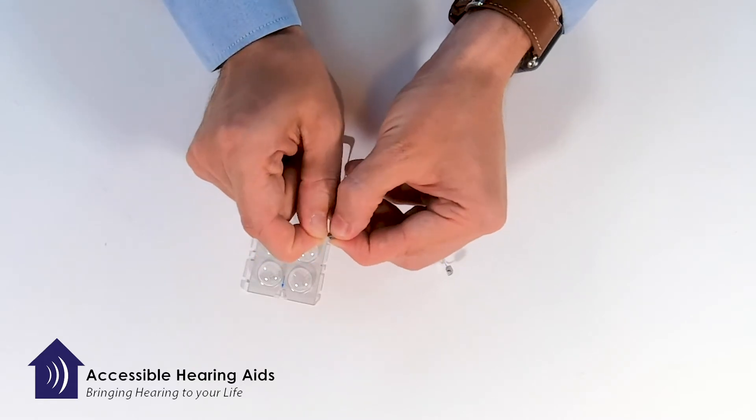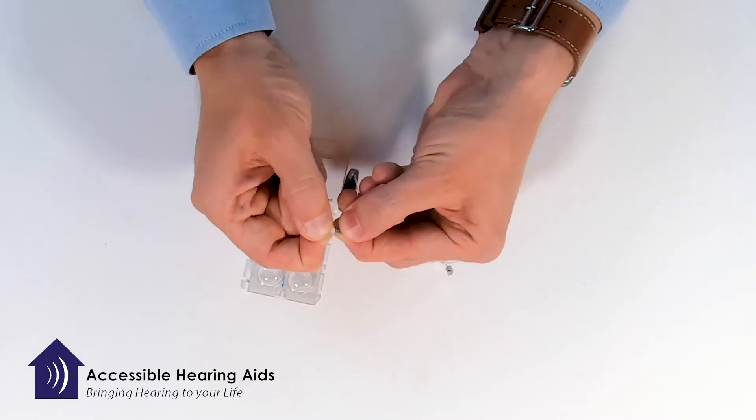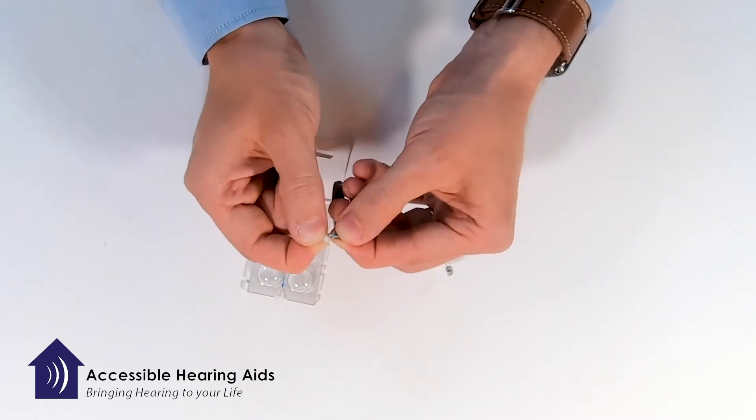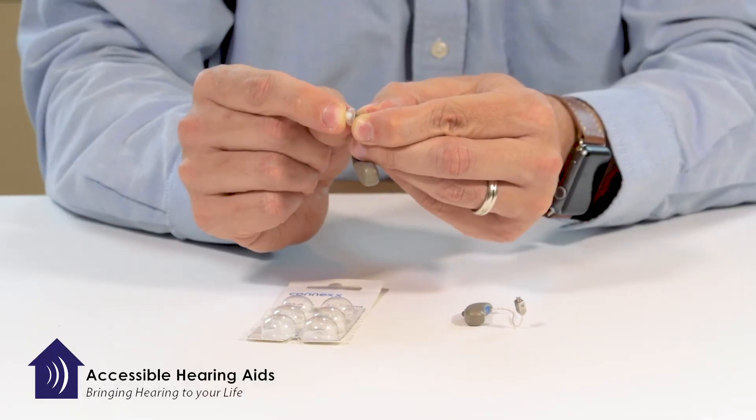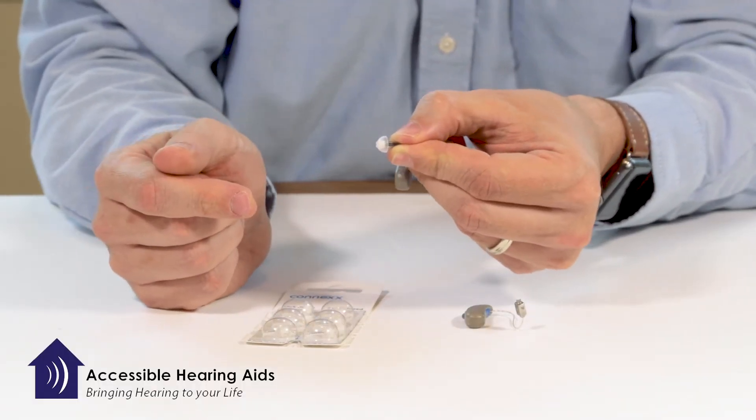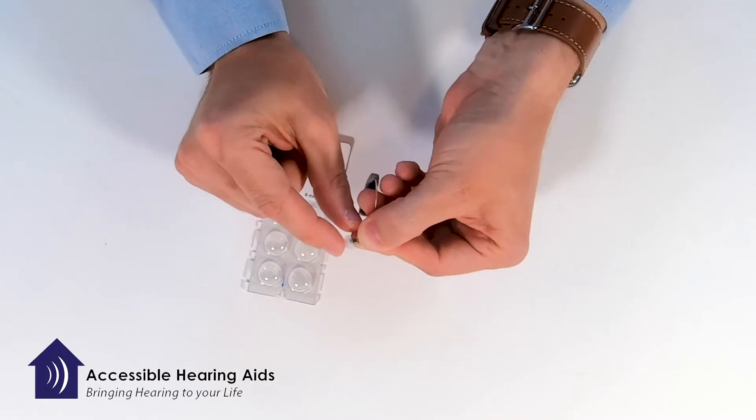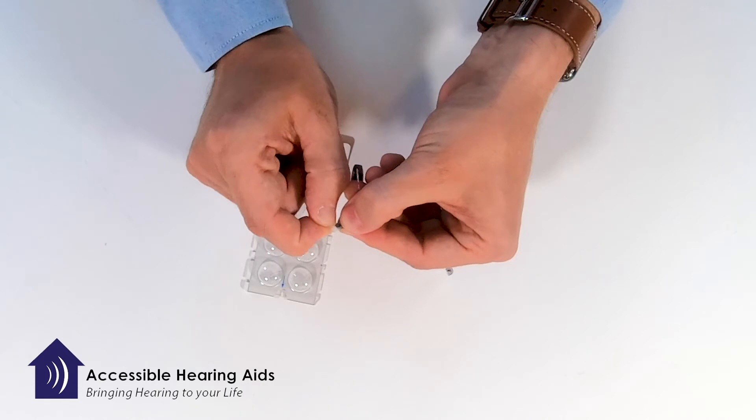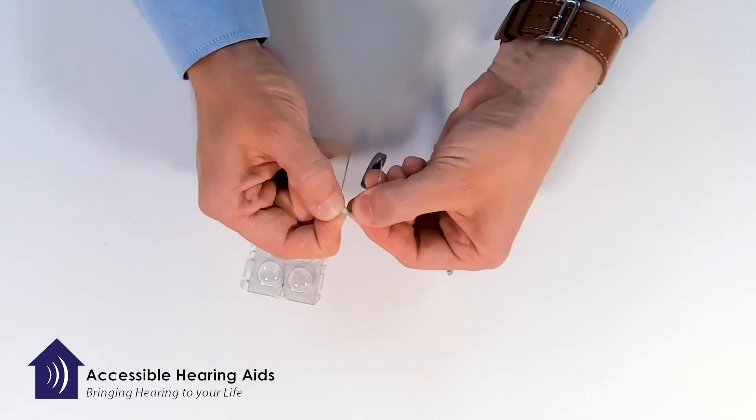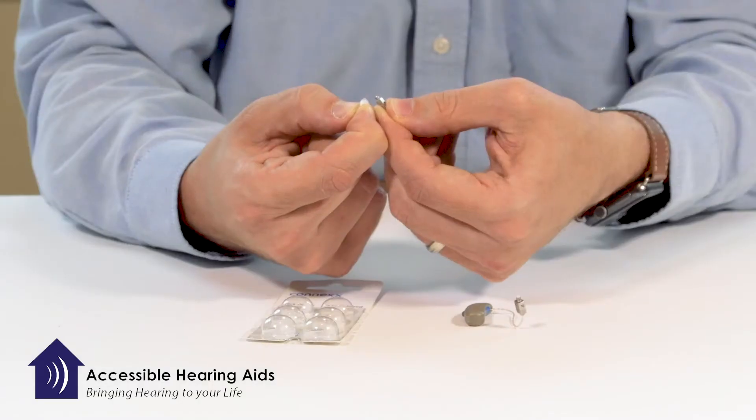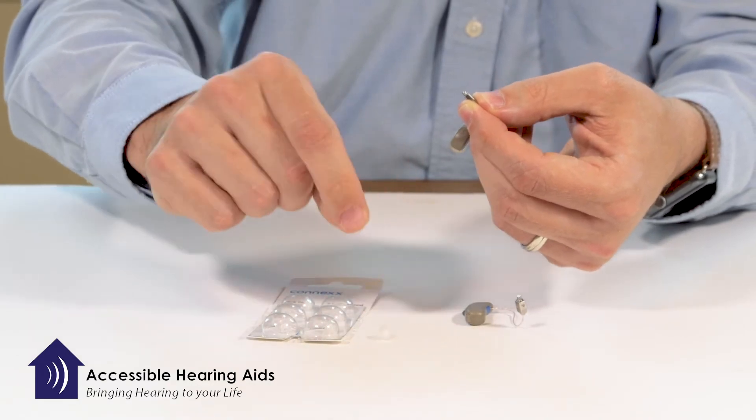You kind of pull apart and then split down. I like to think of - I grew up around a farm with my grandfather and we used to do snap beans, so it's the same type of action if you've ever snapped beans. Pull apart and gently separate, and it should snap right off. Once you have the old one off, you open the pack.